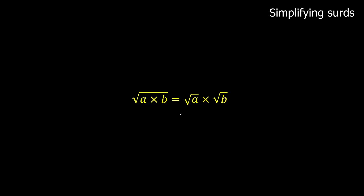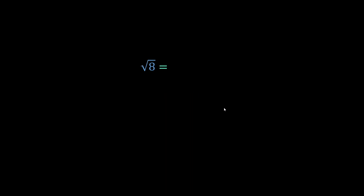Simplifying surds. The main rule of simplifying surds is this: if you have the square root of a number, you can break this number up into two factors — a times b underneath the radical — and that's the same as the square root of the first number times the square root of the second number. Let's go through some examples to see what that really means.